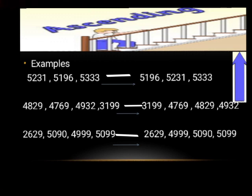Next example is 2629, 5090, 4999 and 5099. First comes the smallest number, that is 2629, then 4999, then 5090, and the largest number is 5099.